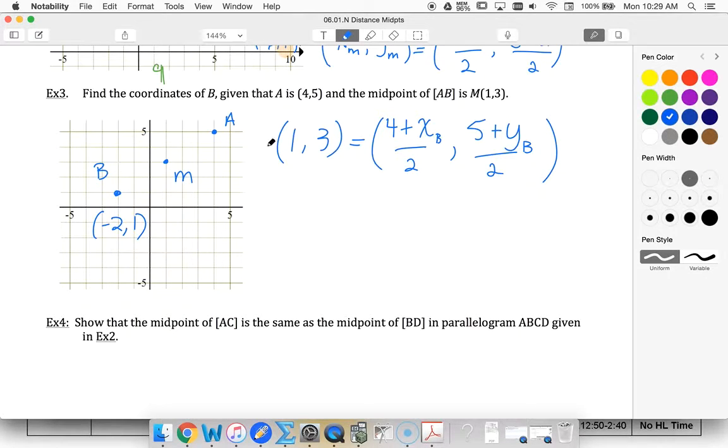So this must match with my 1. So (4 plus x_B) divided by 2 must equal 1. Multiply both sides by 2. 4 plus x_B must equal 2. Subtract 4 from both sides. My x coordinate must be -2. That matches what we did with our logic.